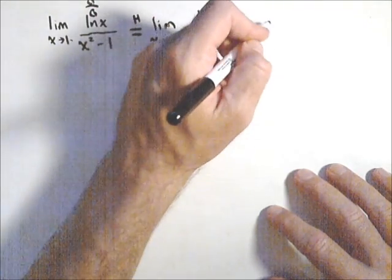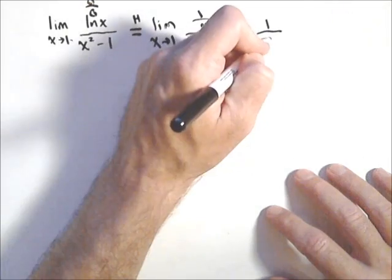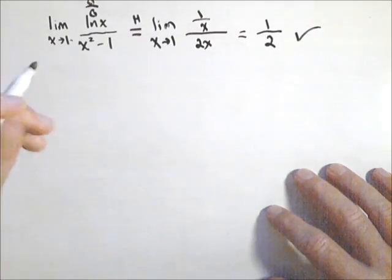Plugging one in, I get one over one, which is one, and on bottom I get two. And there's our limit.